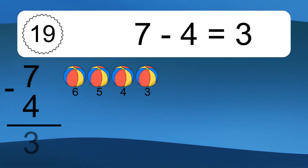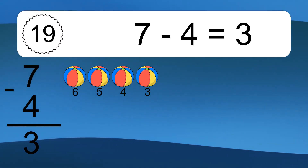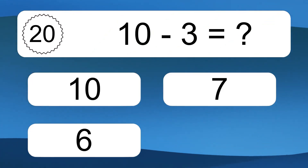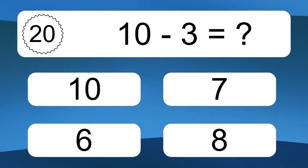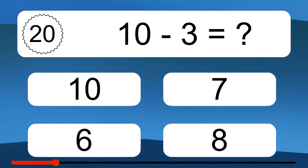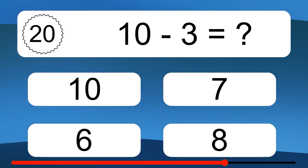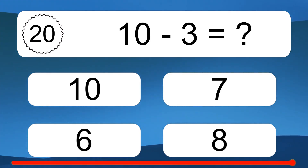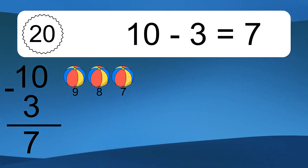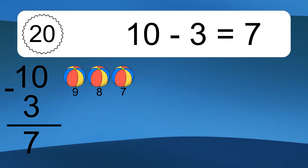7 minus 4 equals what? 7 minus 4 equals 3. Let's count it: 6, 5, 4, 3. 10 minus 3 equals what? 10 minus 3 equals 7. Let's count it: 9, 8, 7. Thank you.